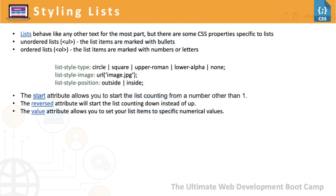Styling lists — lists can be styled by controlling properties like list-style-type, which can be none, circle, square, or even an image. You can set list-style-position to inside or outside. Usually with lists we would not use the default styles, but that is your choice. With just a few properties you can create a navbar from a list, and we'll see that in action. The start attribute lets you start list counting from a number other than one. Reversed makes numbering go from larger to smaller, and the value attribute lets you set a list item to a specific numerical value.